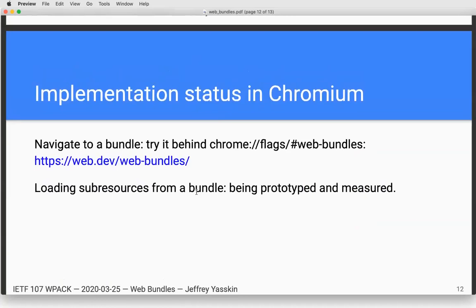These are partially implemented for some use cases in Chromium. It's currently possible to navigate to a bundle, and there's a web.dev article describing how and giving some demos. We're working on being able to load sub-resources from a bundle — things like providing all the images on a page in one download or a JavaScript module tree in one file. This is intended as a possible output format for things like Webpack and ParcelJS. We'd love to get more input on what to test and help figuring out what works and what doesn't.